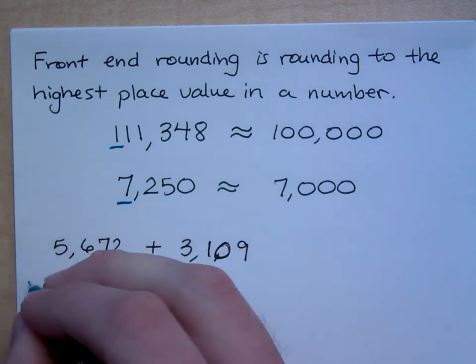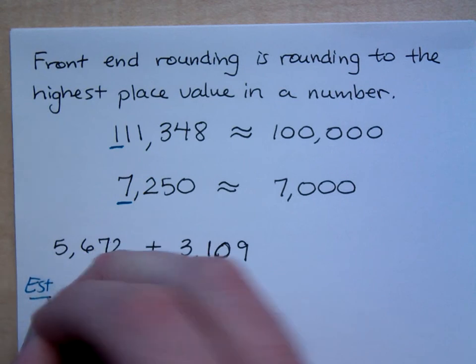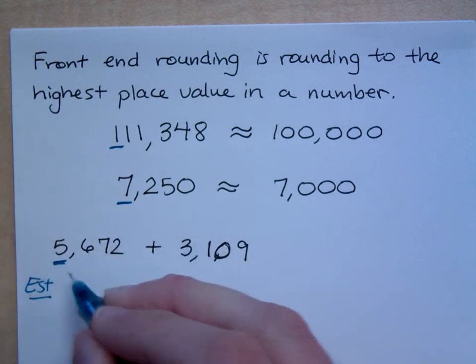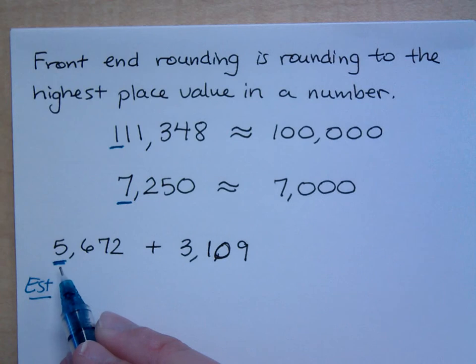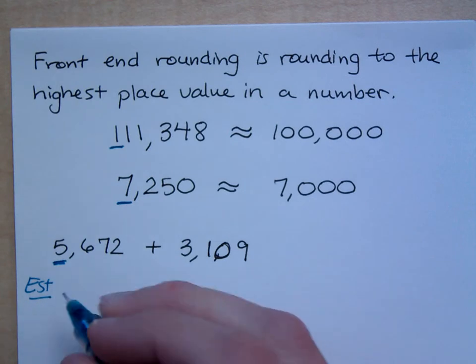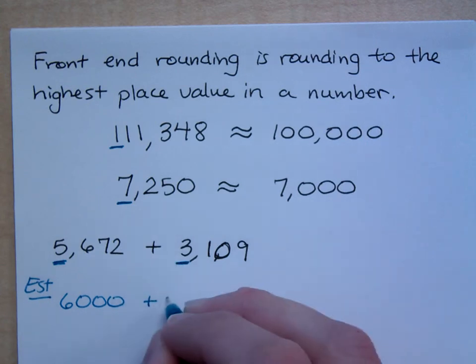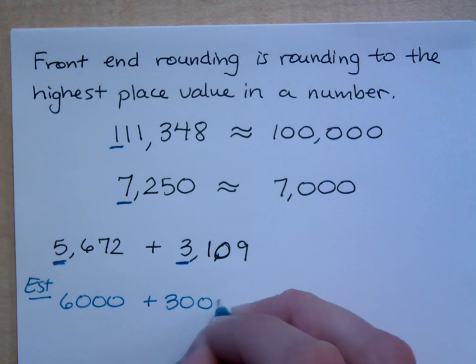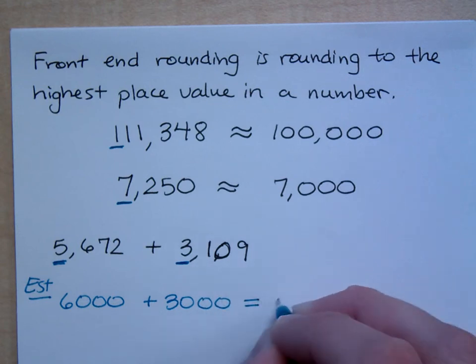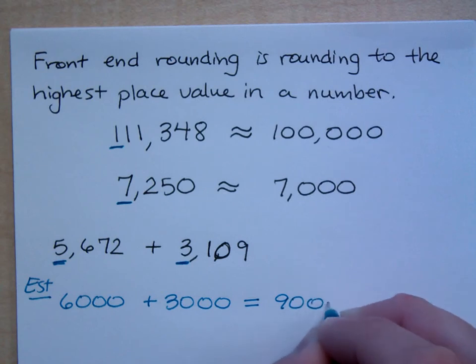If I were to estimate this, if I were to use front-end rounding, looking at this guy, how would I round to the nearest 1,000 on this number? So this is about 6,000, plus use front-end rounding here, that's about what? So very quickly, I would say that my estimated answer would be about what? It would be about 9,000.